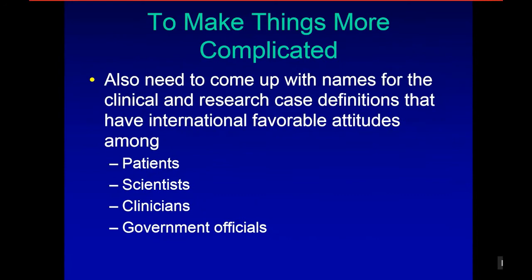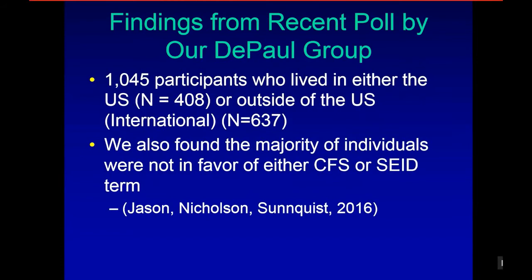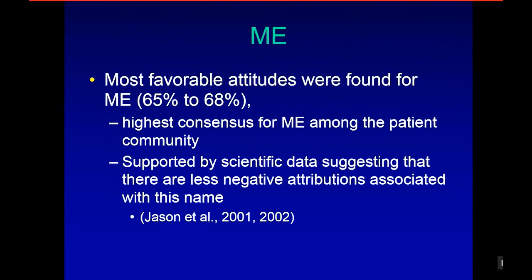To make things more complicated, we also need names for the clinical and research case definitions that have internationally favorable attitudes among patients, scientists, clinicians, and government officials. A patient survey by Lisa Petersen from Paradigm Change found the majority expressed negative opinions about IOM's proposed name SEID. Our group published a poll in 2016 of over a thousand participants in the US and outside, and also found the majority were not in favor of CFS or SEID. The most favorable attitudes were found for ME — 65 to 68% were favorable, the highest consensus among the patient community.